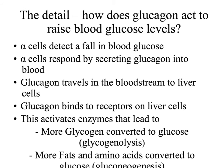If blood glucose goes too low, alpha cells detect the fall in blood glucose. They respond by secreting glucagon into the blood, which travels to the liver cells. Glucagon then binds to specific glucagon receptors found on the plasma membranes of the liver cells. This causes the liver cells to respond in such a way that enzymes are activated. These enzymes carry out processes such as glycogenolysis — breaking down glycogen into glucose — converting fats and amino acids into glucose, or respiring other molecules instead of glucose to conserve it. All of these processes lead to an increase in blood glucose levels.